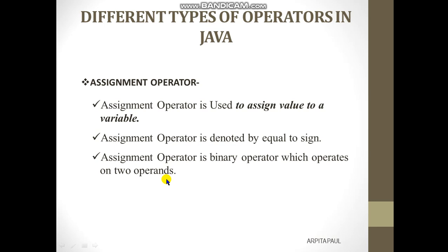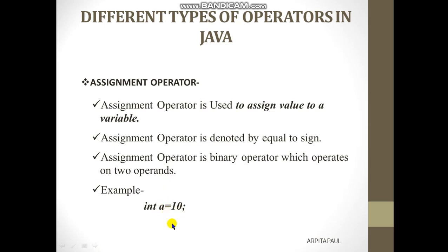Let's see one example. Here I have written 'int a = 10'. The equals-to sign is the assignment operator and it is assigning the value 10 to the variable a. At a time it is using both a and 10 — that is why it is called a binary operator. It is accessing two operands: the value and the variable together.